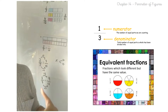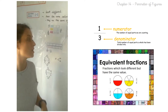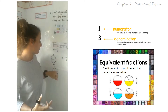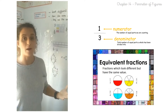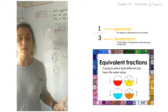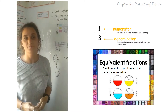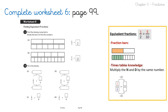So remember, if you want to find equivalent fractions, you don't need to draw fraction bars if you don't want to. You can use your multiplication knowledge to find out. You could also divide the numerator and the denominator by the same number in order to get smaller equivalent fractions. Now I would like you to pause the video and complete page 99. You need to find the equivalent fractions by looking at the fraction bars or using your times tables knowledge. Please come back once you've completed your workbook so we can continue with the lesson.